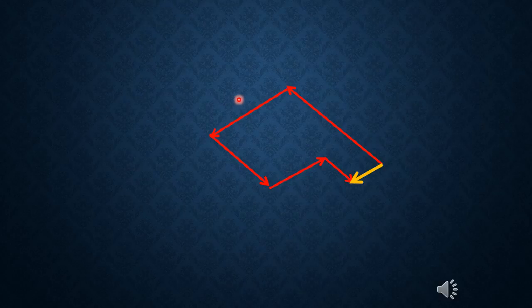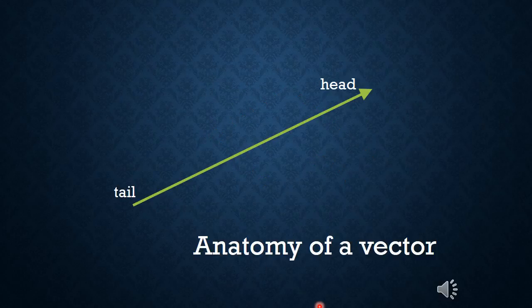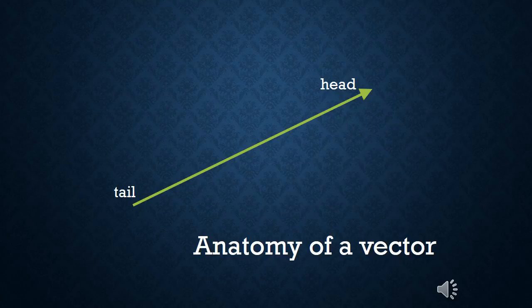We always say that we add vectors head to tail, which means we join the head and the tail. The head of the vector is the direction it's pointing — it's where the arrow is, and if it's a displacement it's where you end up. The tail of the vector is the starting point. Thinking of adding vectors together is usually pretty easy with displacements. It is a little more challenging when we think of velocity vectors, acceleration, or forces, but we use the same basic ideas.